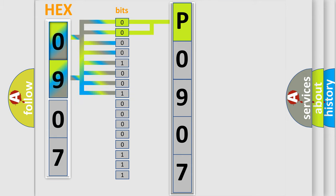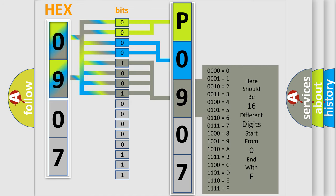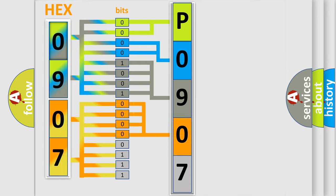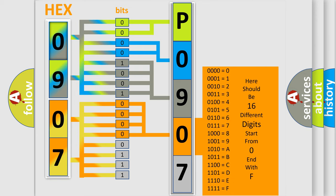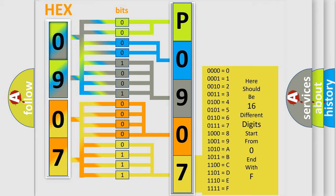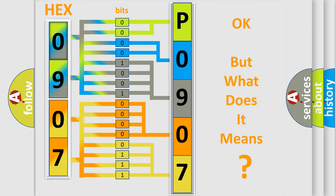The next two bits determine the second character. The last bits of the first byte define the third character of the code. The second byte is composed of a combination of eight bits. The first four bits determine the fourth character, and the combination of the last four bits defines the fifth character. A single byte conceals 256 possible combinations. We now know how the diagnostic tool translates the received information into a more comprehensible format.